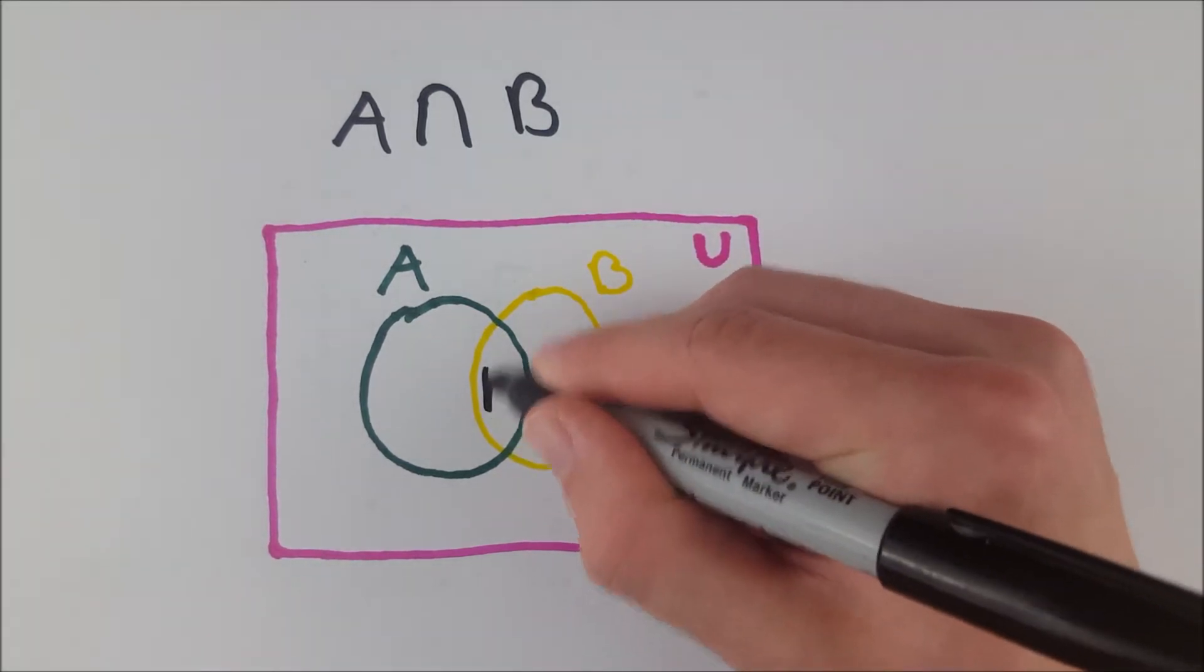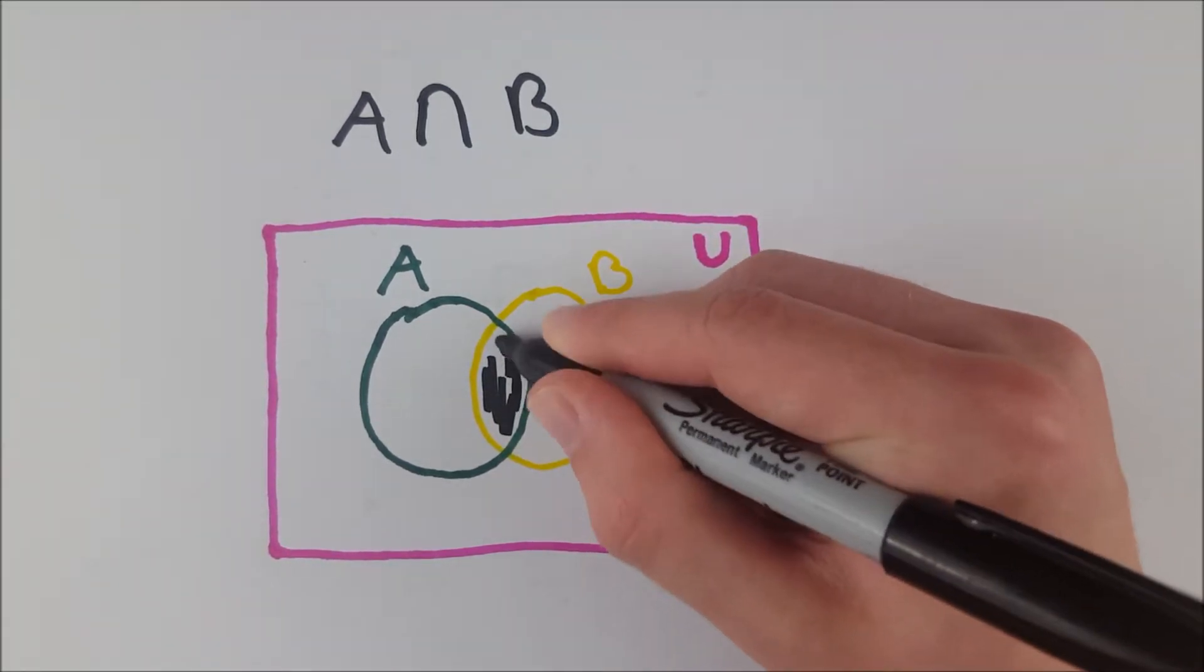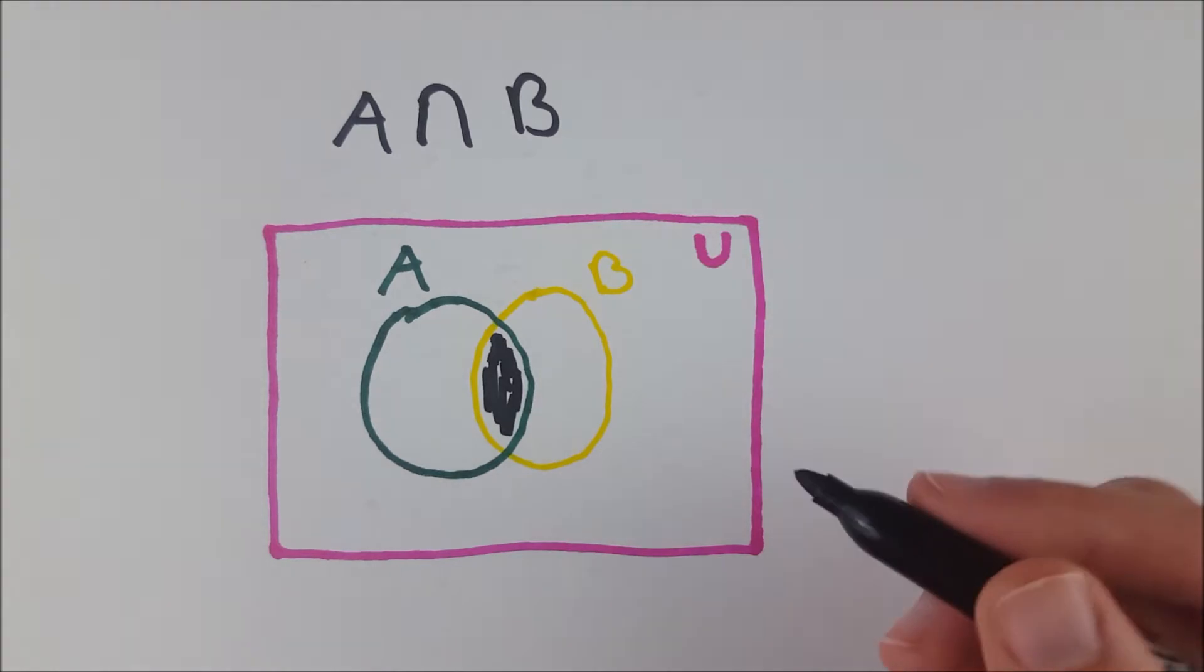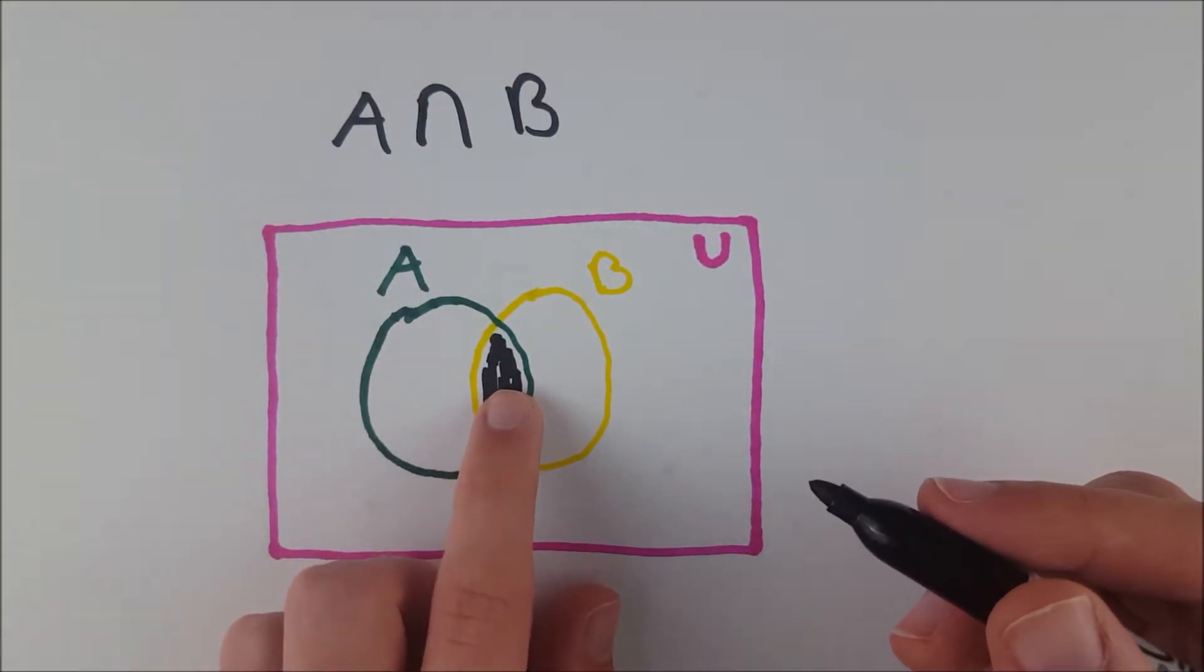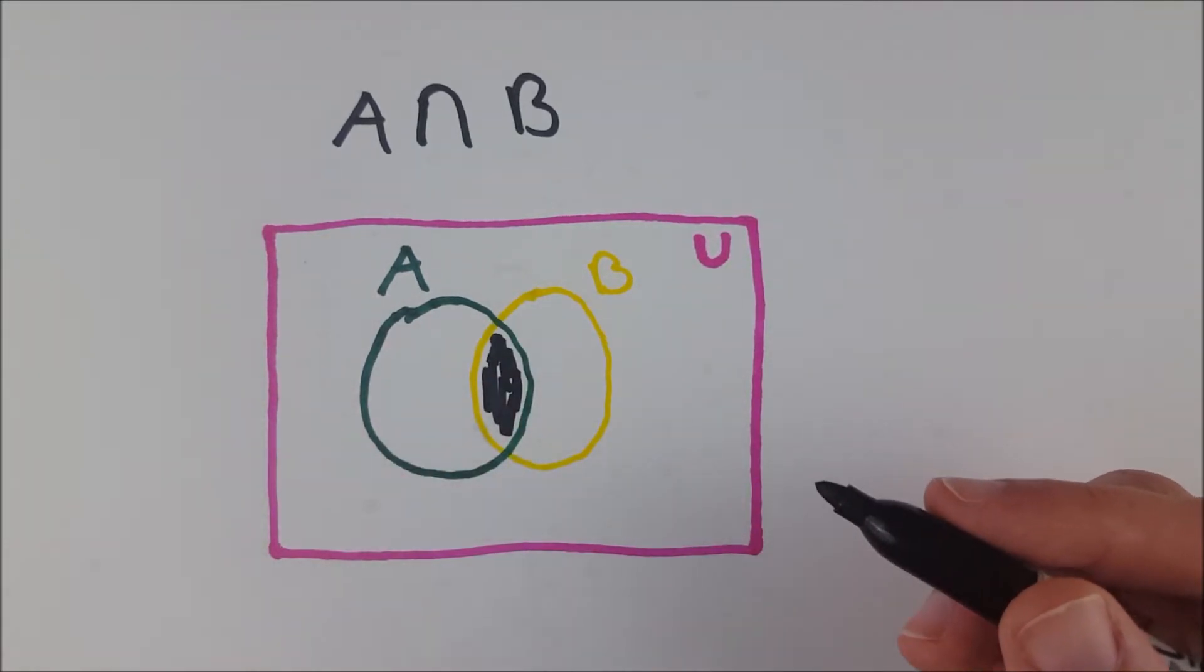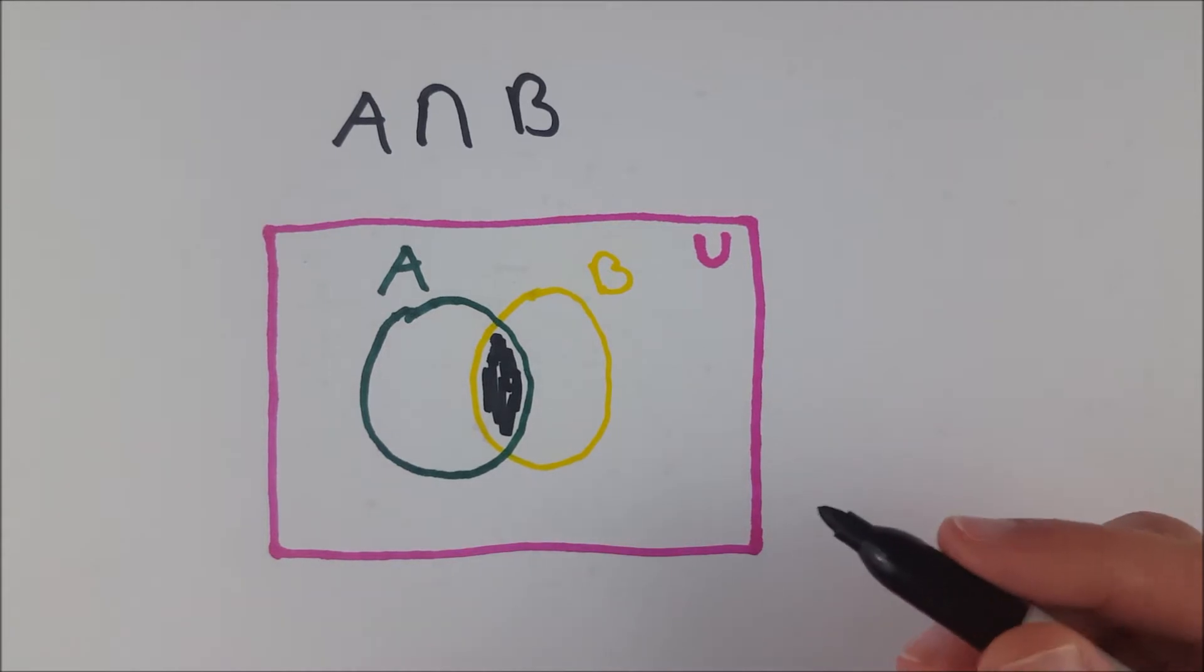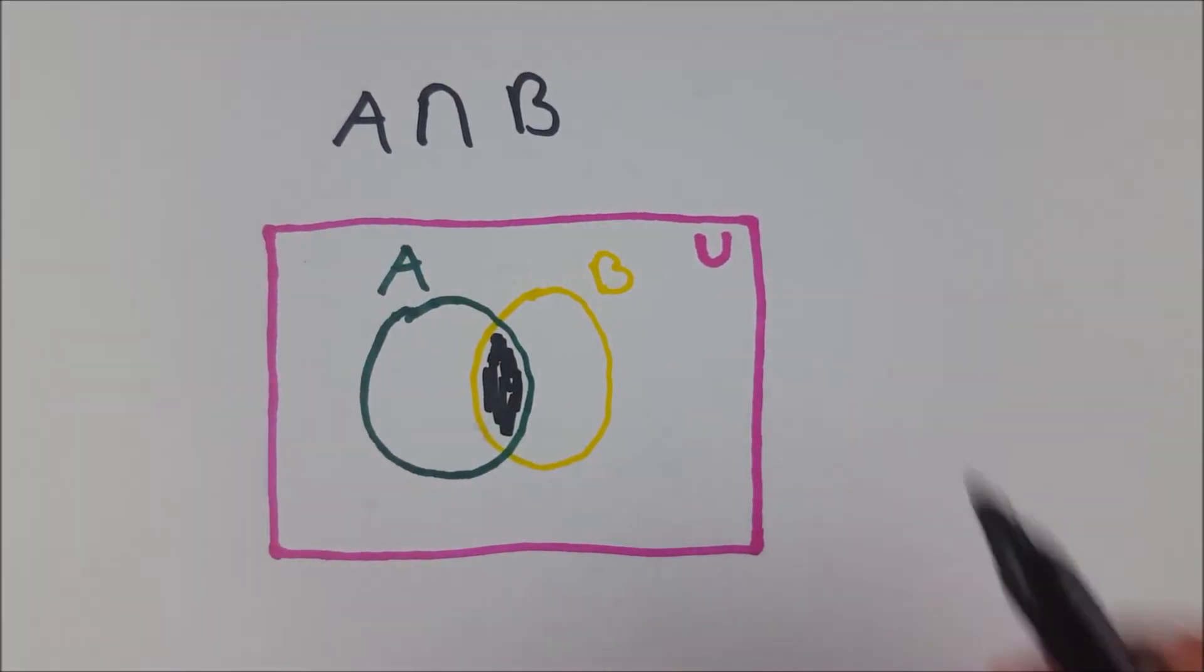This is the intersection of A and B, because this is the space where the elements lie that are in A and that are in B. Any element in here is an element of A, as you can see, and it's an element of B. And the set containing all of those elements is the intersection of A and B.